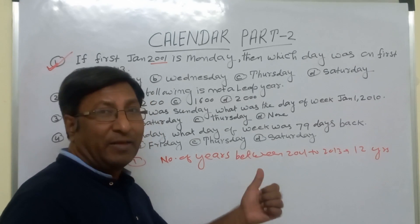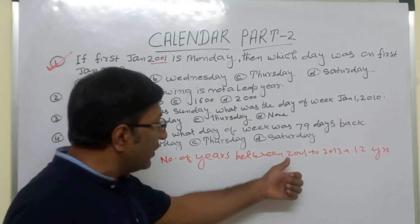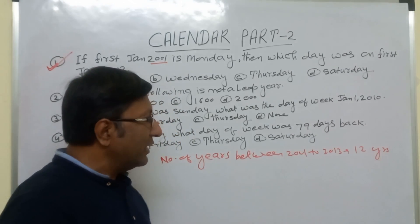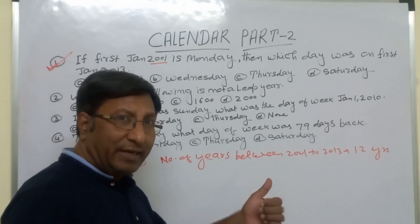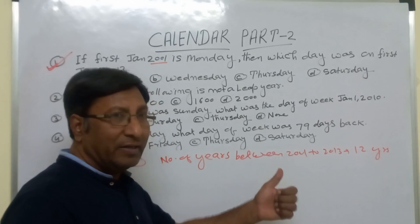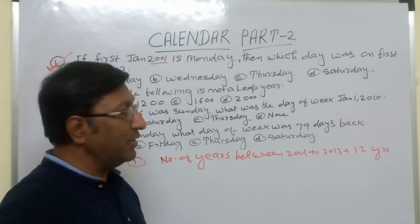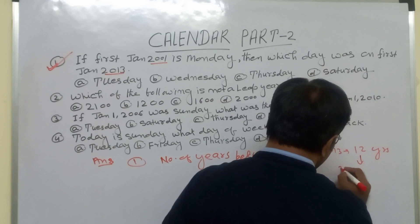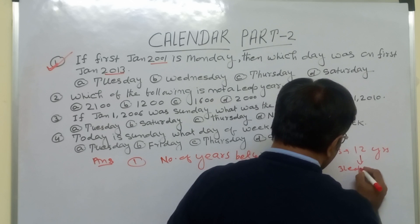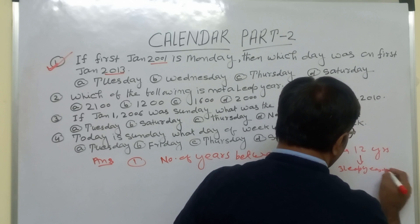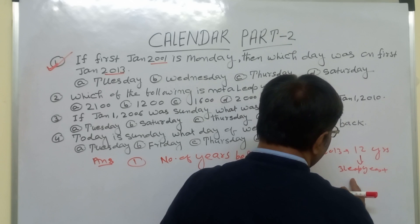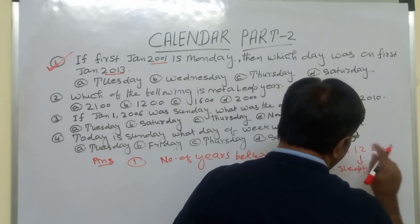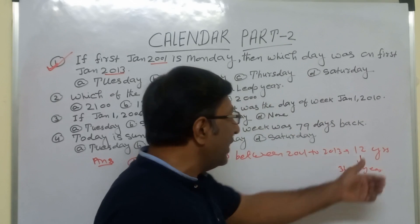From 2001 to 2013 — total 12 years. In these 12 years, the leap years are 2004, 2008, and 2012 — that is three leap years. So in 12 years there are three leap years and nine normal years.